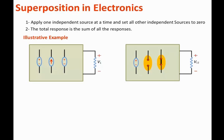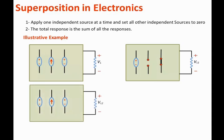Next, we apply the current source and set the two voltage sources to zero, replacing them with two short circuits. We analyze the circuit with the current source active and solve for the load voltage, calling it VL2.